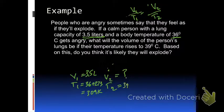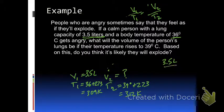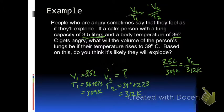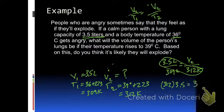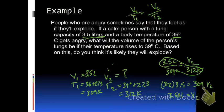T2 is 39 degrees Celsius, which converts to 312 Kelvin. Plugging in: 3.5 liters over 309 Kelvin equals V2 over 312 Kelvin. So V2 equals 3.5 times 312 divided by 309. That gives V2 approximately 3.53 liters — so not much really changes, and the person probably would not explode in this problem.